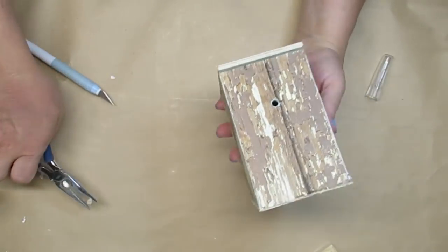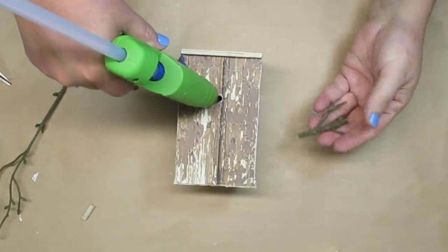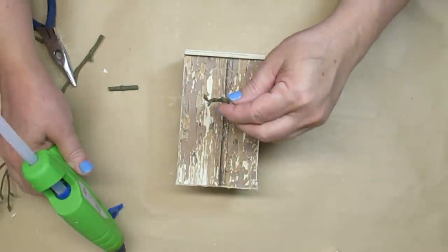Using some needle nose pliers, I'm just going to twist it until I get that little piece of dowel out. I cut down a piece of artificial stem and I'm going to hot glue that into the hole so that becomes the perch for the birds.